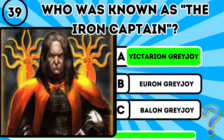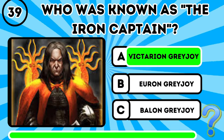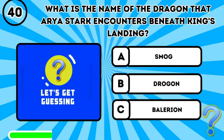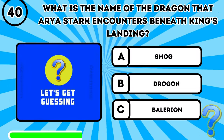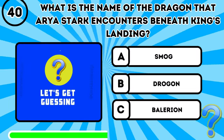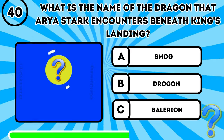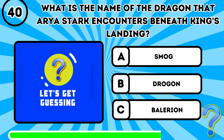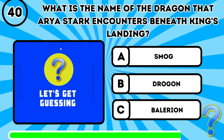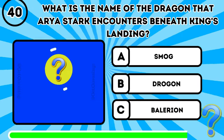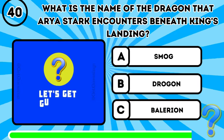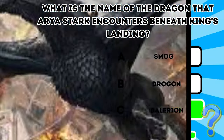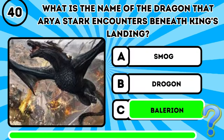Question 39: Who was known as the Iron Captain? It's A, Victarion Greyjoy. Question 40: What is the name of the dragon that Arya Stark encounters beneath King's Landing? It's C, Balerion.